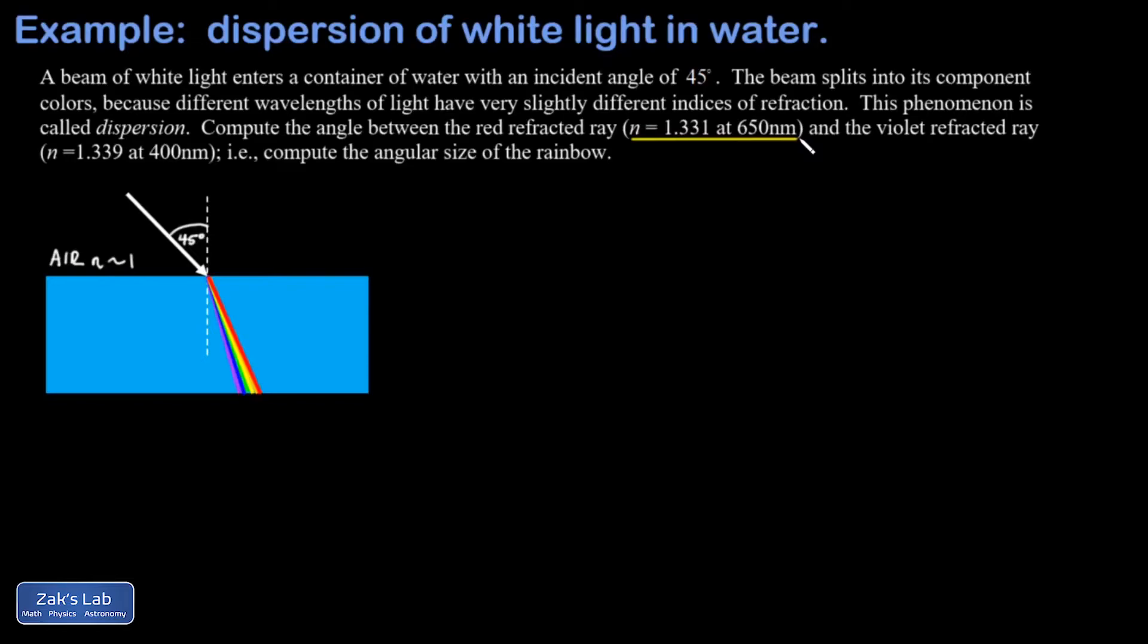and then the violet end of the spectrum, those are the shortest wavelengths, have an index of refraction of about 1.339 for 400 nanometer violet light. We're simply asked to get the angular size of this rainbow of dispersed light. So we want to get the angle of refraction for the red and the violet and just take the difference between those. Now to get the angle of refraction for each ray